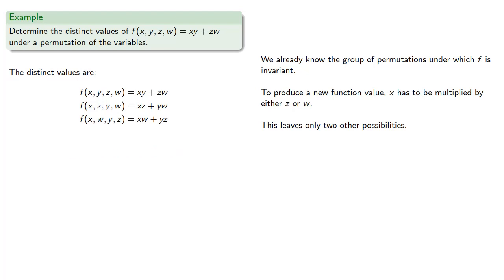And so, let's think about this. There is a group of permutations that give us this value, xy plus zw. And then, every other permutation is going to give us one of these other two values. And this turns out to be very important, and we'll take a look at that in a little while.